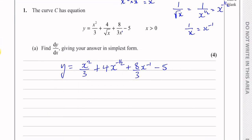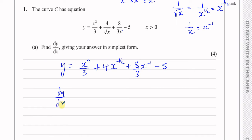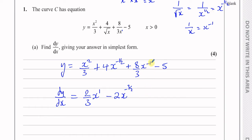Now it's ready to differentiate. Don't write dy/dx before you actually start differentiating. To differentiate, we multiply by the power and take 1 from the power. So X squared over 3 gives 2 over 3 X. Then negative a half times 4 is minus 2, and taking 1 from minus a half gives minus 3 over 2, so we get minus 2X to the power of minus 3 over 2. Then minus 1 times 8 over 3 gives minus 8 over 3, and taking 1 from minus 1 gives X to the power of minus 2. Any constant differentiates to 0.